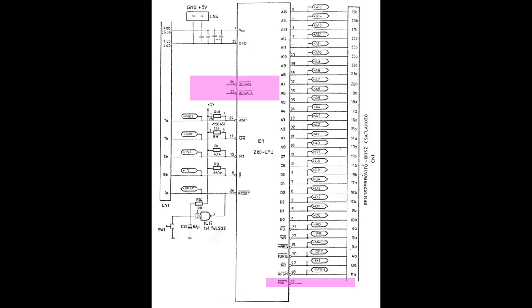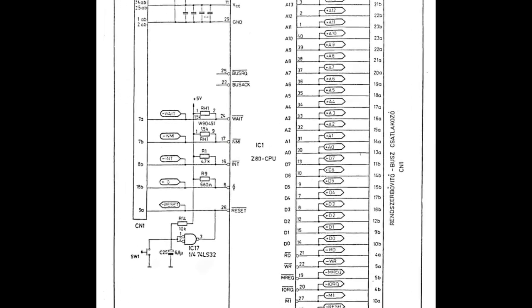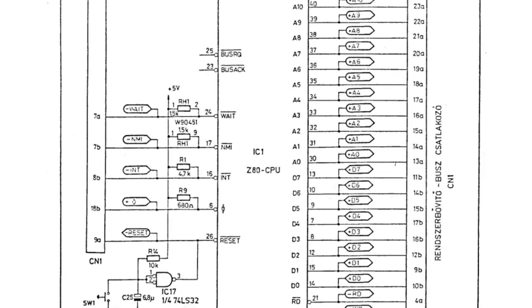Bus Request can also be used to detach the Z80 from the bus and take control over it — for example when using DMA — and the CPU can answer with Bus Acknowledge when it is releasing the bus. There are two more pins for interrupts: non-maskable and the normal interrupt. These are not necessary for this small computer. As you can see, there are small circles and lines on top of the signal names — it means these signals are active when they go down to zero. When I say 'active zero' it means the same thing.